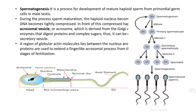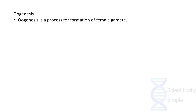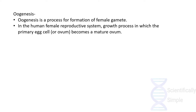Spermatogenesis starts from a diploid spermatogonium in the male testes, which undergoes mitosis to form a primary spermatocyte and another spermatogonium. The primary spermatocyte then undergoes meiosis I to produce haploid secondary spermatocytes, which undergo meiosis II to form four spermatids. These spermatids undergo spermiogenesis to acquire sperm structure.